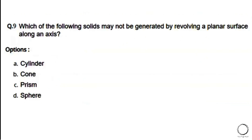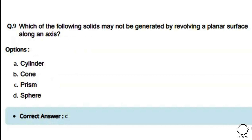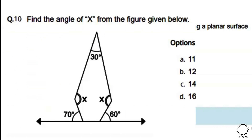Next: Which of the following solids may not be generated by revolving a planar surface along an axis? Options: a) cylinder, b) cone, c) prism, d) sphere. The right answer is option C — prism.